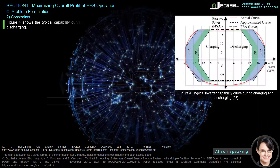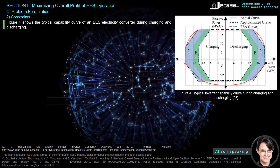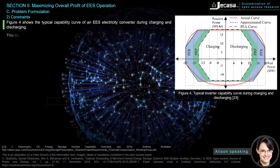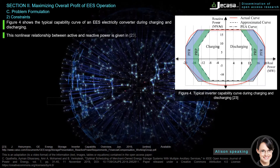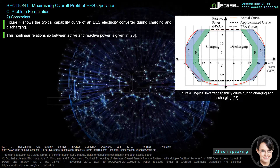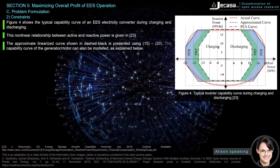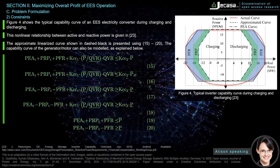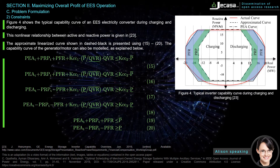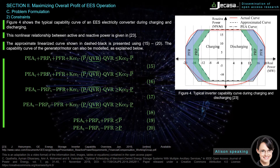Figure 4 shows the typical capability curve of an EES electricity converter during charging and discharging. This nonlinear relationship between active and reactive power is given in reference 23. The approximate linearized curve, shown in dashed black, is presented using equations 15–20. The capability curve of the generator/motor can also be modeled as explained below.